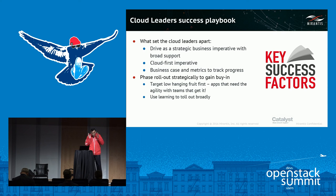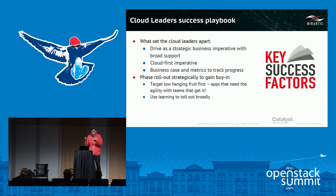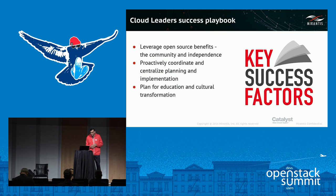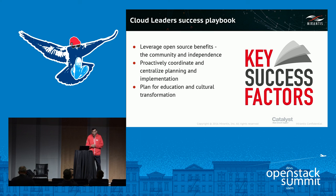They also started off with low-hanging fruit: what are the apps that best require agility, and work with the teams that get it? If people are putting up obstacles, nothing is going to happen. You start there, roll it out, and use that experience and success to roll it out more broadly. And specifically around OpenStack, they leveraged the community benefits — they came to the community for questions, went to meetups, and took advantage of thousands of developers. Many of them were able to fix problems they couldn't have otherwise.